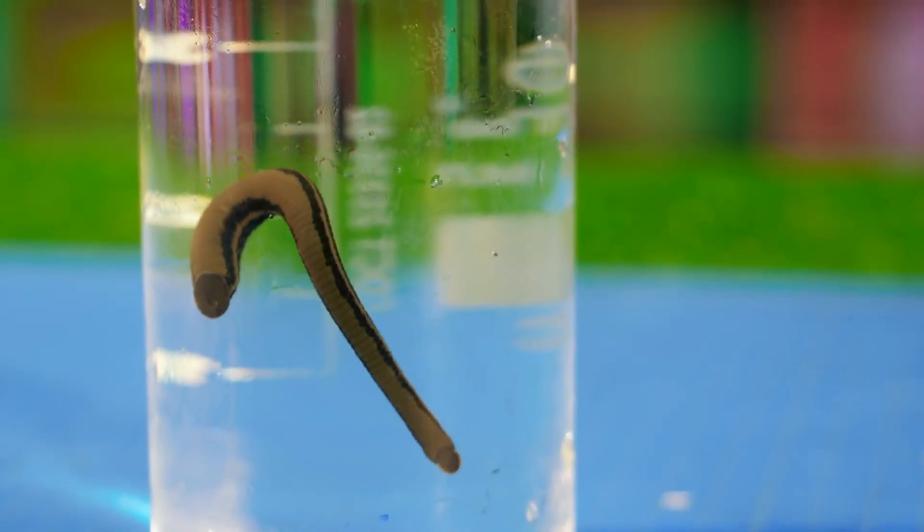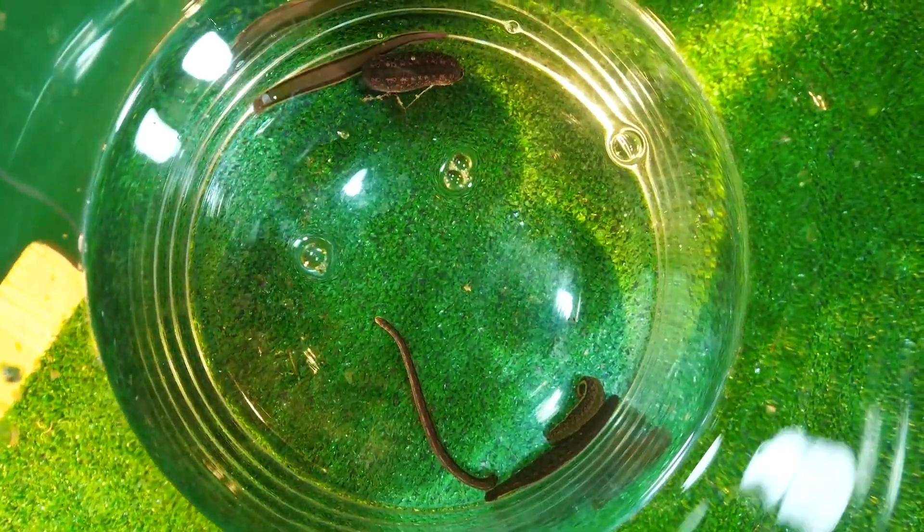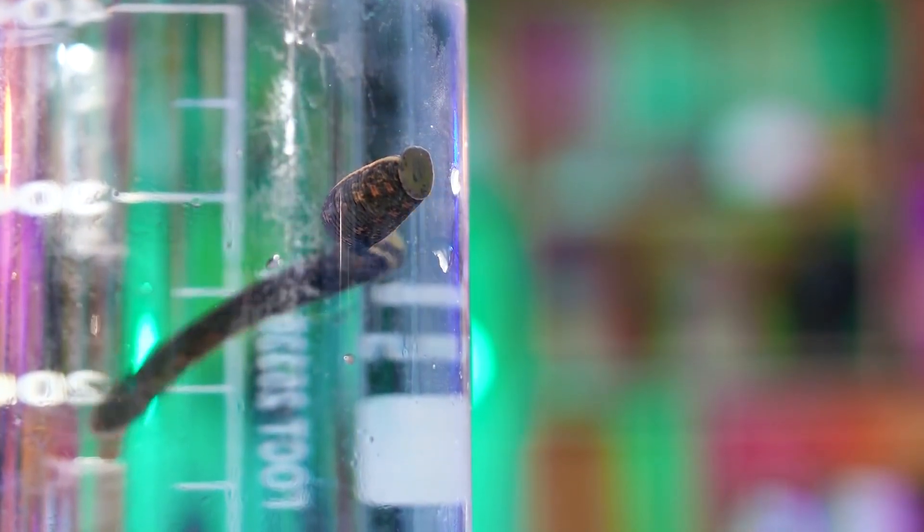Swimming leeches are very good at trying to suck on something right away, and they move by clinging alternately to the front and rear suckers. The front sucker has a mouth in the shape of the Mercedes logo, and the leech feeds exclusively on blood.